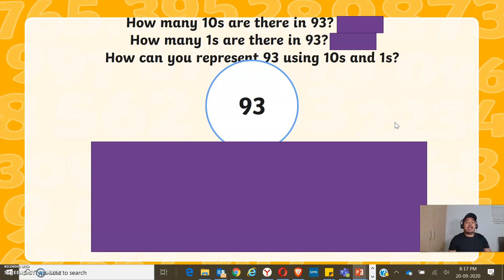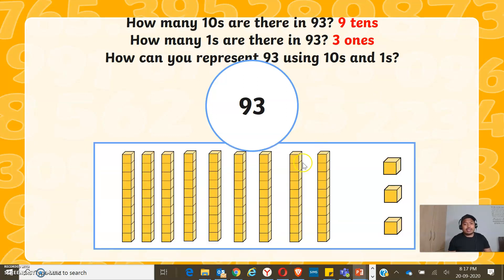Now, how many tens are there in 93? There are 9 tens. How many ones are there in 93? We got 3 ones. To represent 93 using tens and ones, we may use the counters again. The counters in tens and in ones. So we got 9 counters in tens and 3 single counters as ones.